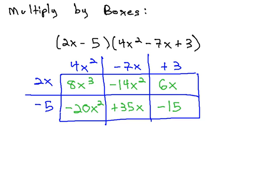Now that we've filled in the boxes, we're ready to come up with our final polynomial by combining like terms, which usually will be diagonal from each other. Notice we have negative 20x squared and negative 14x squared diagonal, and the 6x and 35x diagonal from each other.